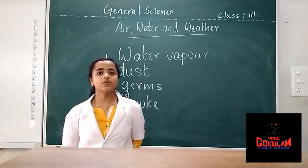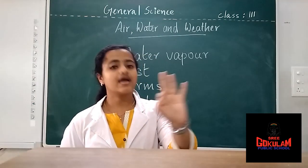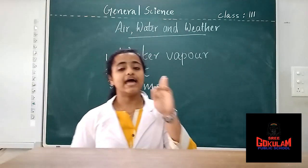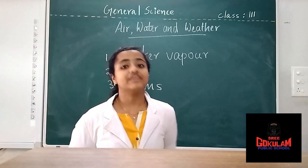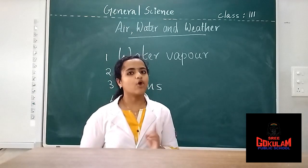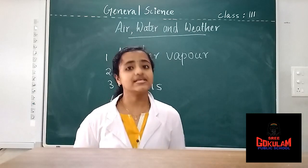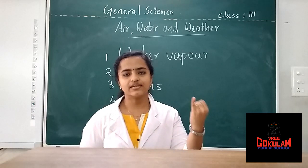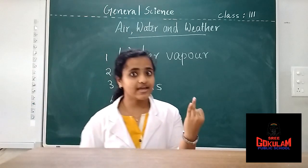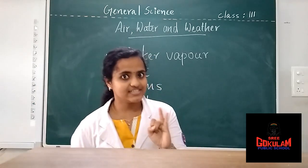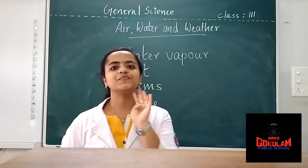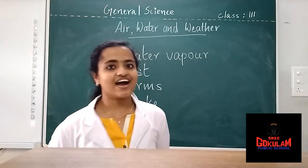This is the class for today. Now I am going to summarize all the points we took today. First, we discussed the three properties of air: air surrounds us and is present everywhere; we can't see air; and we can feel air. After that, we discussed what is wind — moving air is called wind. Then we discussed the different components present in air: the first component was oxygen, then carbon dioxide, then nitrogen. And the other components are water vapor, dust, germs, and smoke. These are the components of air.